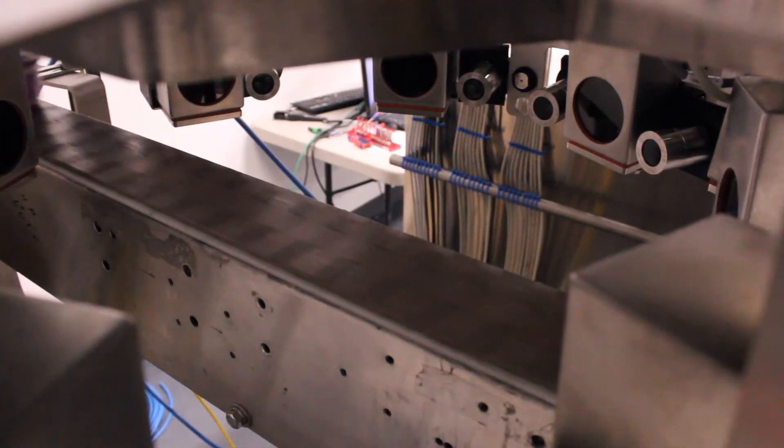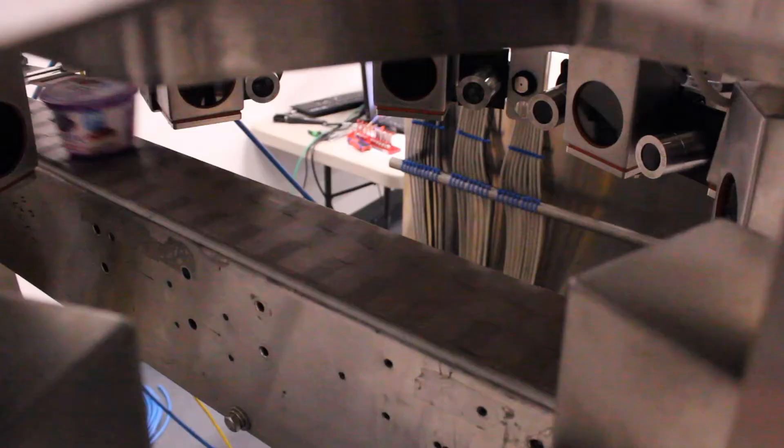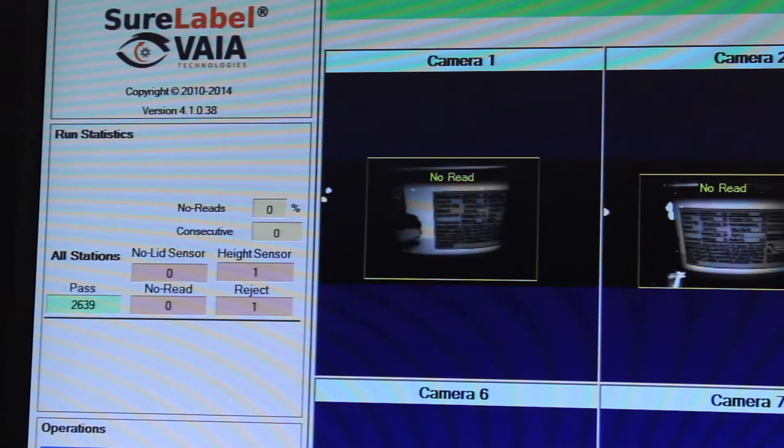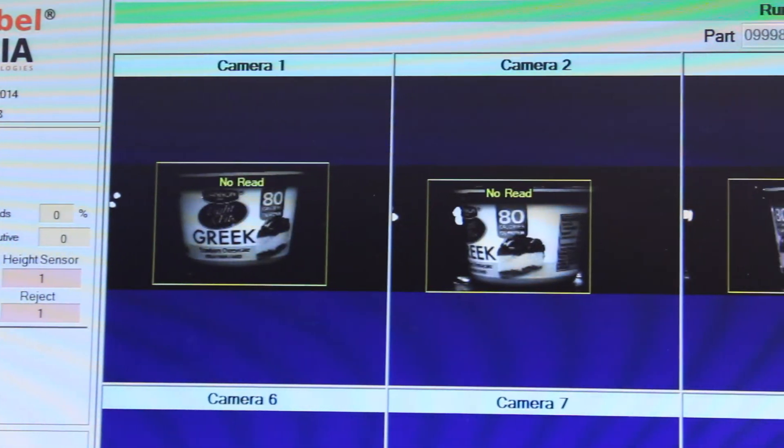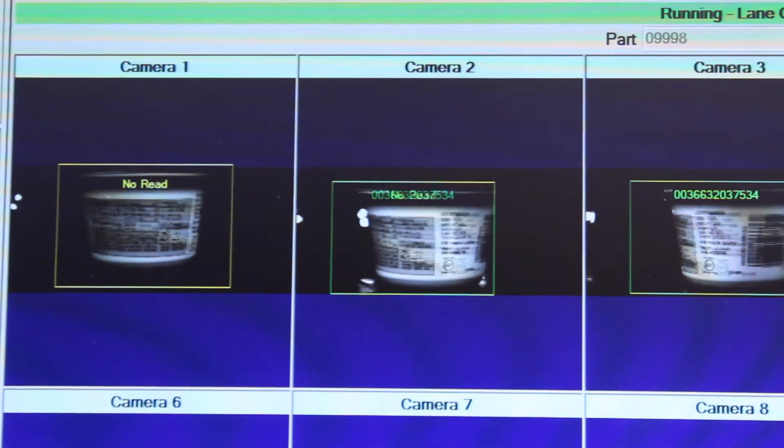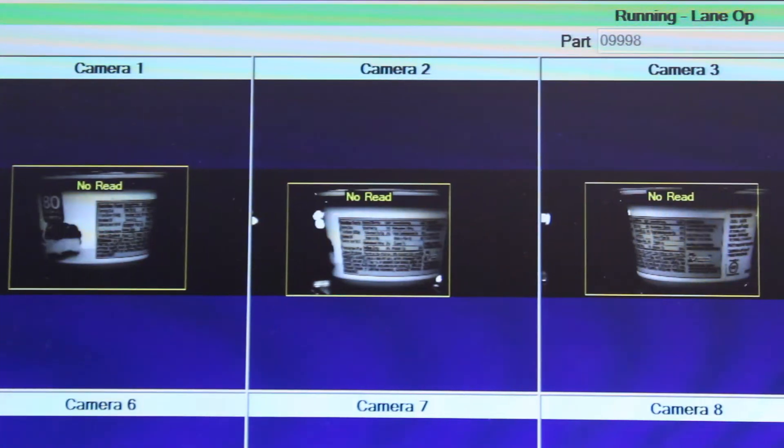Clients of Viya Technologies are using SureLabel to inspect ice cream containers, salad dressing containers, yogurt cups and lids, wine labels, frozen food boxes, mayonnaise bottles, olive oil containers, and more.